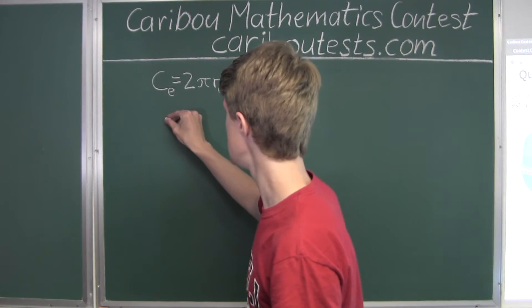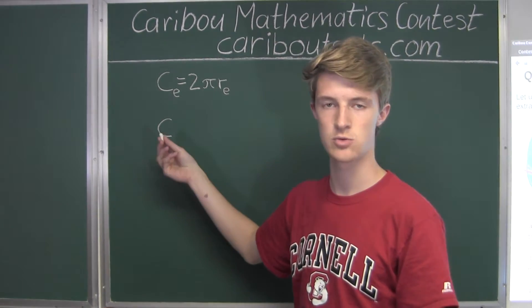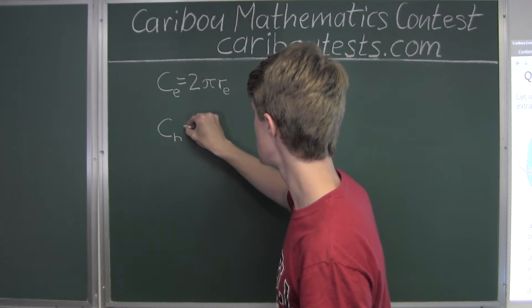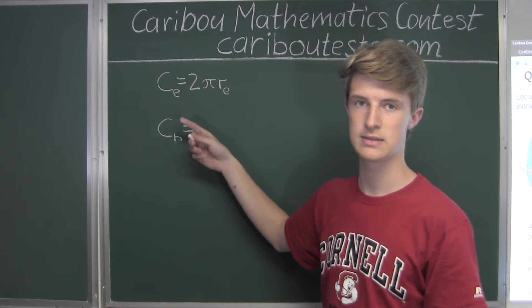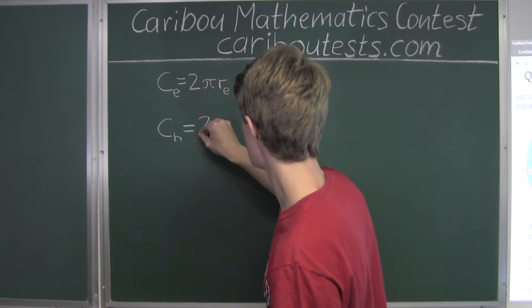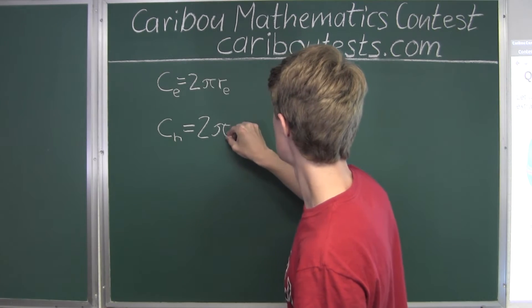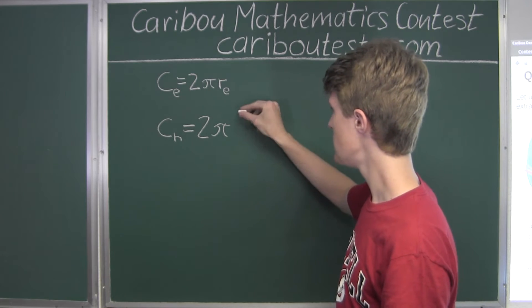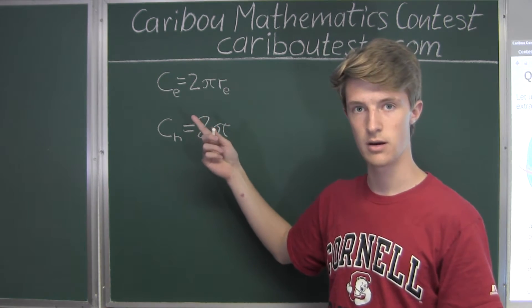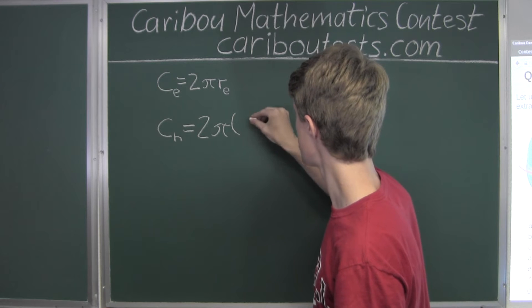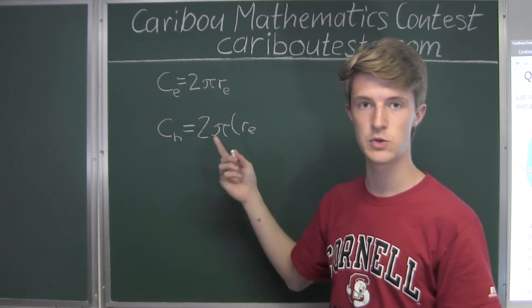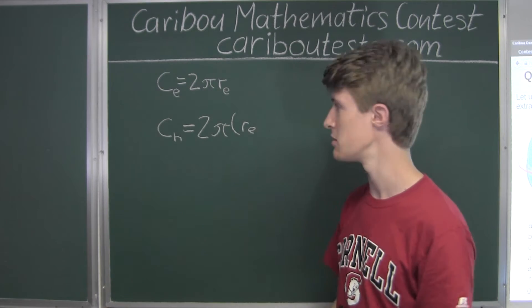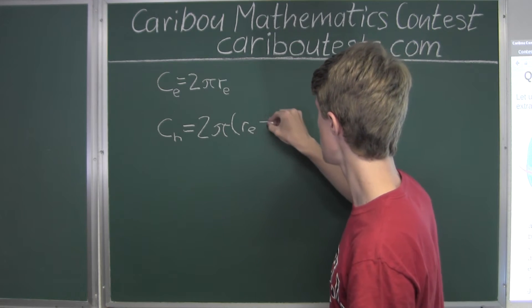We will write C sub H, where H represents the head. This equals 2 pi times—since the head is 2 meters above the ground—the radius of the equator plus 2 meters. So C sub H equals 2 pi times (R sub E plus 2m).